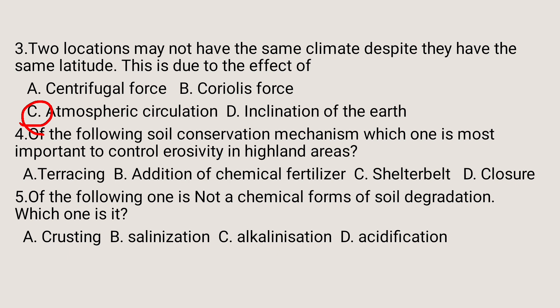Question number four: of the following soil conservation mechanisms, which one is most important to control erosivity in highland areas? A: terracing, B: addition of chemical fertilizer, C: shelter belt, D: closure. Terracing is the most important mechanism for controlling soil erosivity in highland areas. The shelter belt is used in arid areas, closure is for closing deforested areas, and chemical fertilizer addition improves soil fertility. So A is the answer.